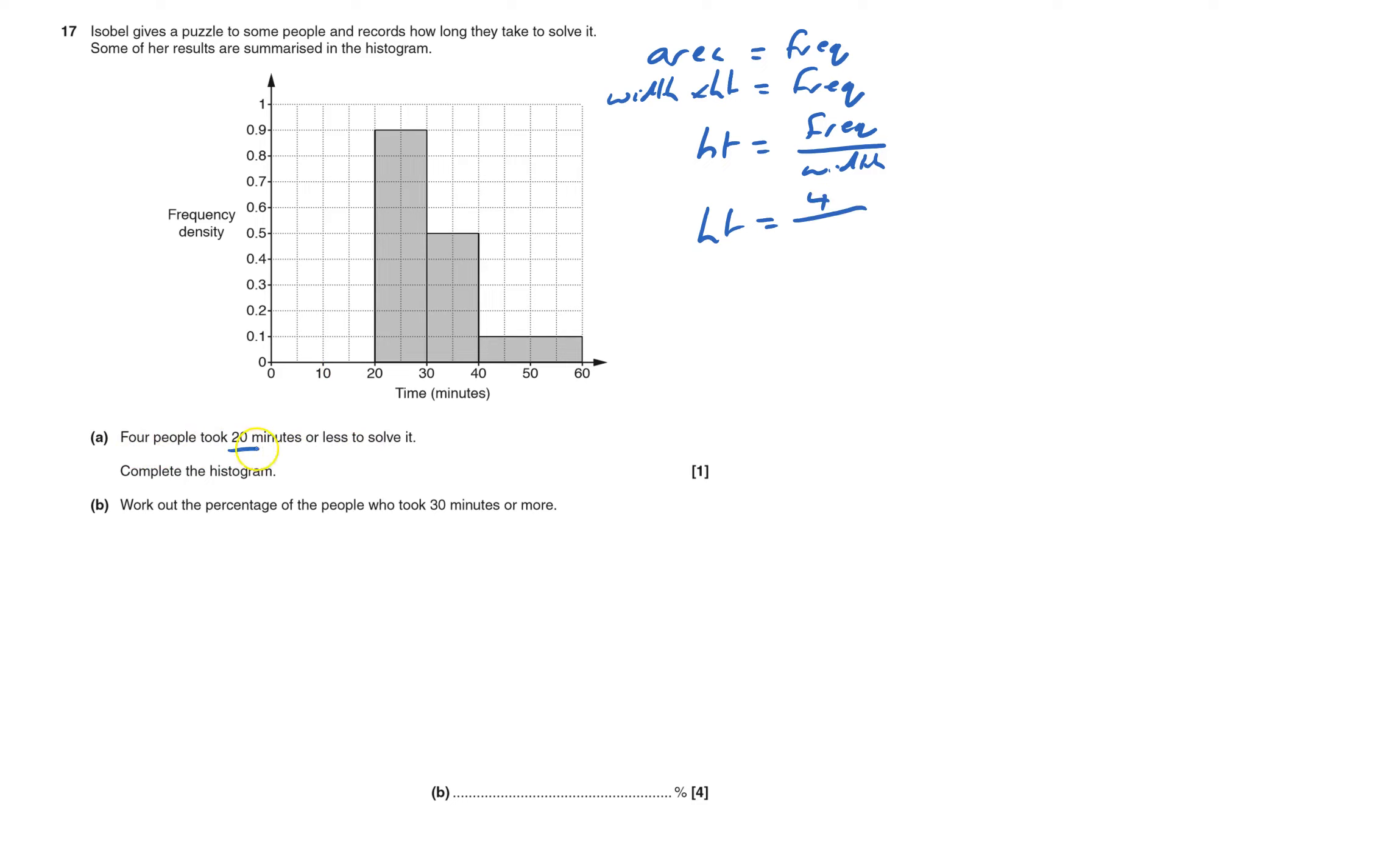It's from 20 or less, so that width will be 20, and 4 over 20 is 2 over 10, which equals 0.2.